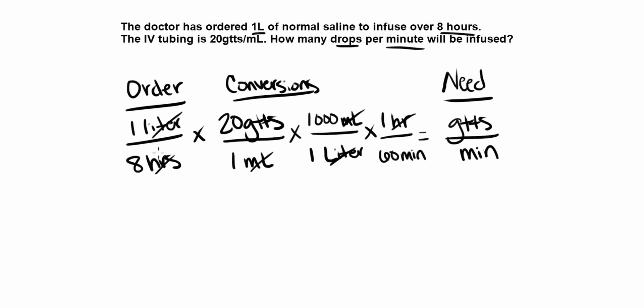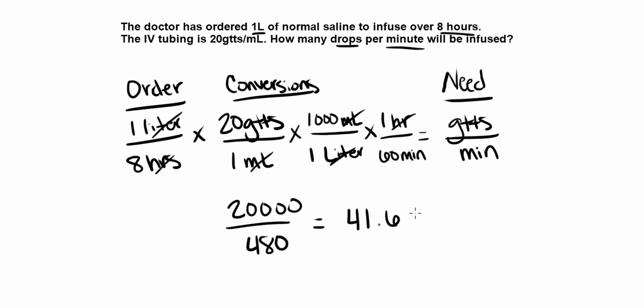Step 4 is to solve the problem — multiply straight across the top, multiply straight across the bottom, and divide those two numbers. Multiplying 1 by 20 by 1000 gives us 20,000. Multiplying 8 by 1 by 1 by 60 gives us 480. Dividing 20,000 by 480 gives us 41.6. Step 5: apply our rounding rules — if it's 5 or above, round up; if it's 4 or below, round down. Since 6 is above 5, we round up to 42. So the answer is 42 GTTS per minute.